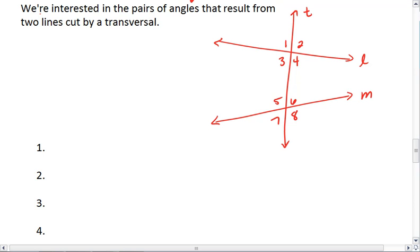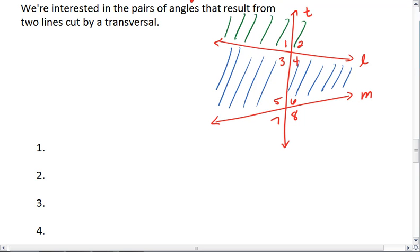When we're looking at these eight angles, the way that we describe the relationship between any two is based on the angle's relationship to either the inside, so let's change color here, the inside of lines L and M, or the outside of lines L and M, as well as what side of the transversal T those angles are on.